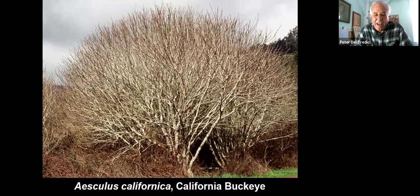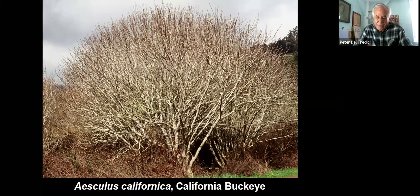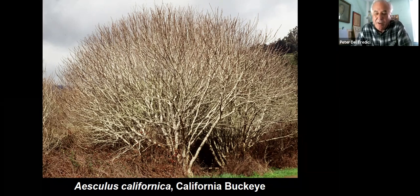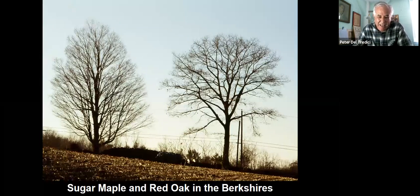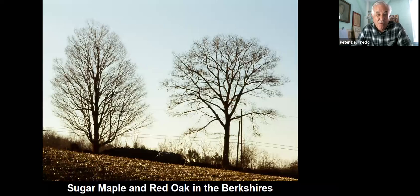In contradistinction to that is the California buckeye, where yes, it has a single trunk, but very quickly the branches have an equivalency about them and you can no longer tell where the leader is. As opposed to having a hierarchy with a strong central leader and lateral branches, here you have an equivalency among all the branches, and this hierarchy between the trunk and the branches disappears. You can see that from a distance.